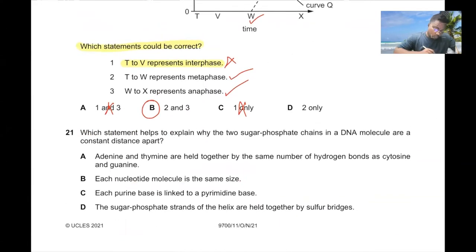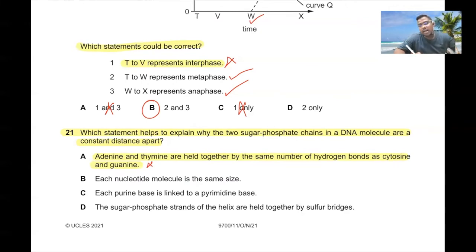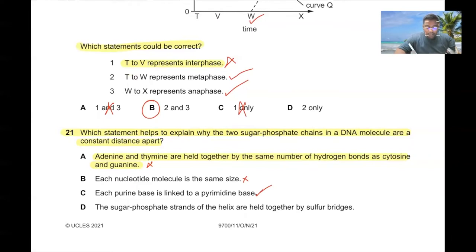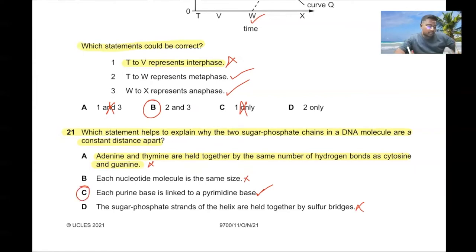Question number twenty-one. Which statement explains why the two sugar-phosphate chains in a DNA molecule are a constant distance apart? Adenine and thymine are held by two hydrogen bonds and cytosine and guanine by three — not the same number, so A is wrong. Nucleotide molecules can be of different sizes, so B is wrong. Each purine base is linked with a pyrimidine — that is correct, which is why they have similar widths. Sugar-phosphate strands are not held by sulfur bridges. The answer is C.